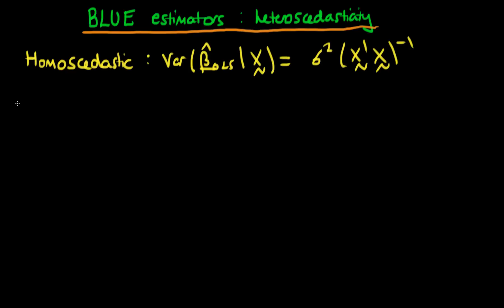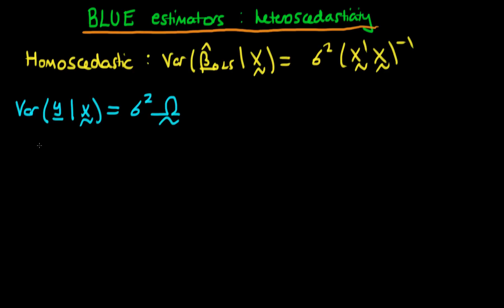Now if we assume we have heteroscedasticity, this means that the variance of y given X is equal to σ² times some diagonal matrix Ω, where the diagonal matrix Ω is not equal to the identity matrix. We're going to use this to help us derive the variance of OLS estimators in the presence of heteroscedasticity.